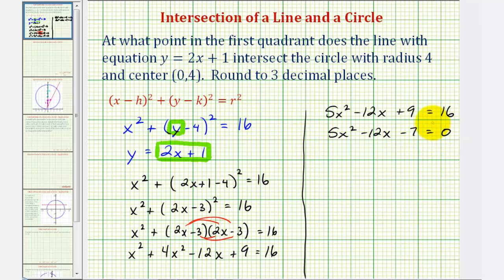Unfortunately, this is not factorable, so now we'll have to solve this using the quadratic formula. And keep in mind, we're looking for the point in the first quadrant, so we're only concerned about the positive solution to this equation. When using the quadratic formula, we'll have a equals 5, b equals negative 12, and c equals negative 7. Keep in mind, we are asked to round the coordinates of the point of intersection to three decimal places.